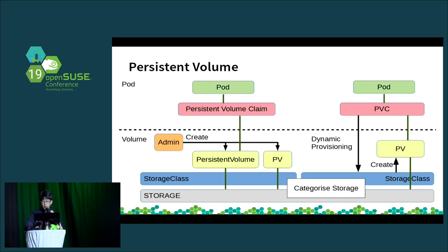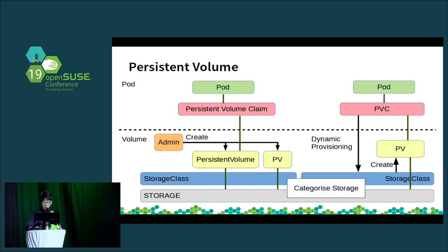To use this mechanism, a pod should have a persistent volume claim name and a mount point in the pod. A persistent volume claim defines what is wanted — for example, volume type, capacity, and access mode. The type is a storage class. A persistent volume expresses the volume to use, and defines type, capacity, and access mode, which is the same as the persistent volume claim.